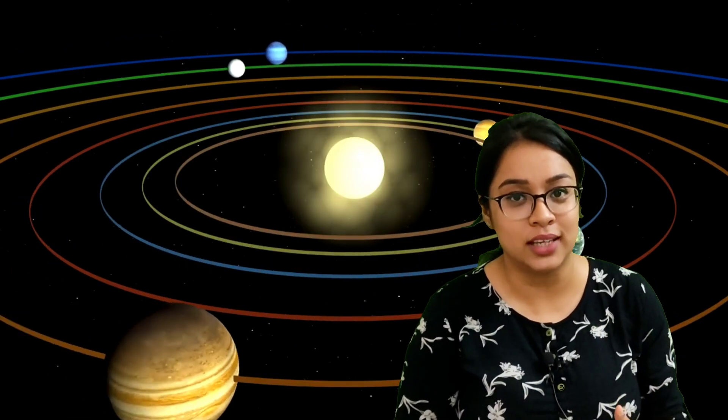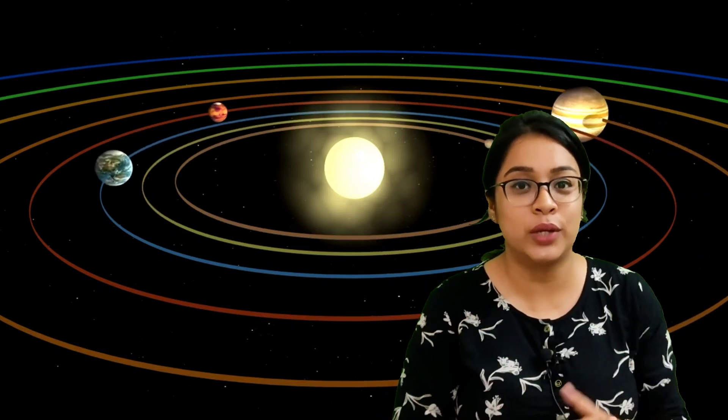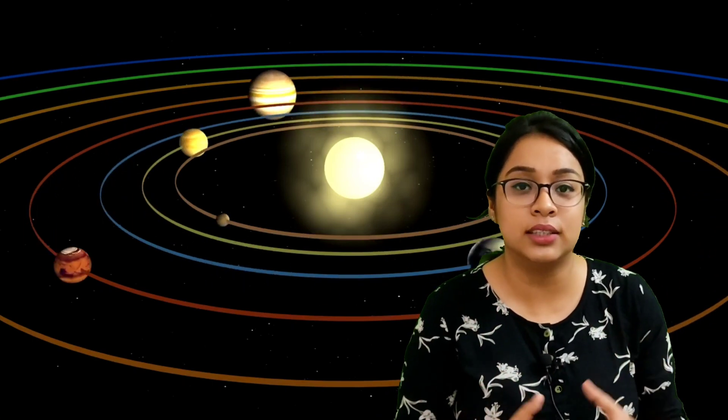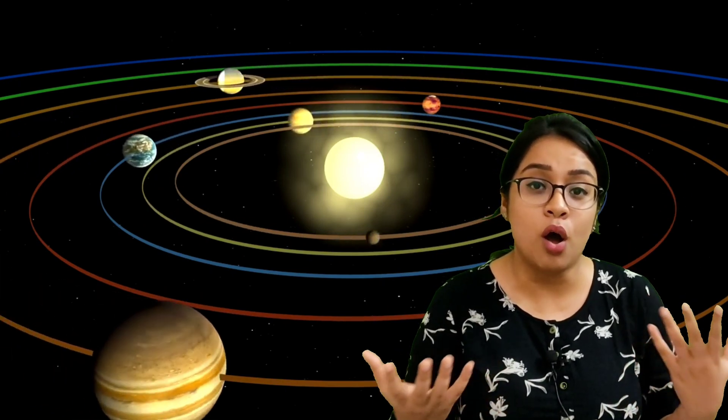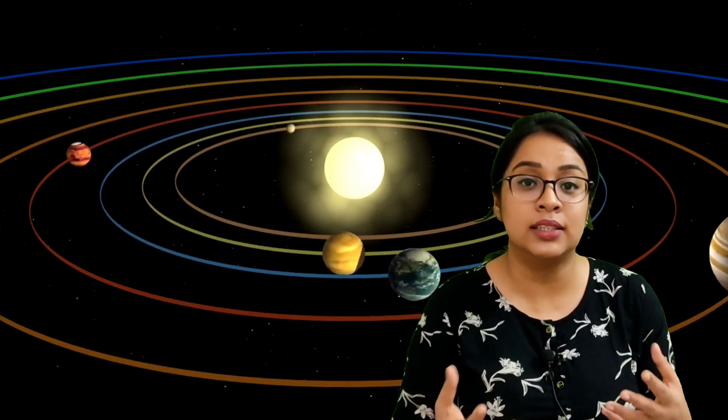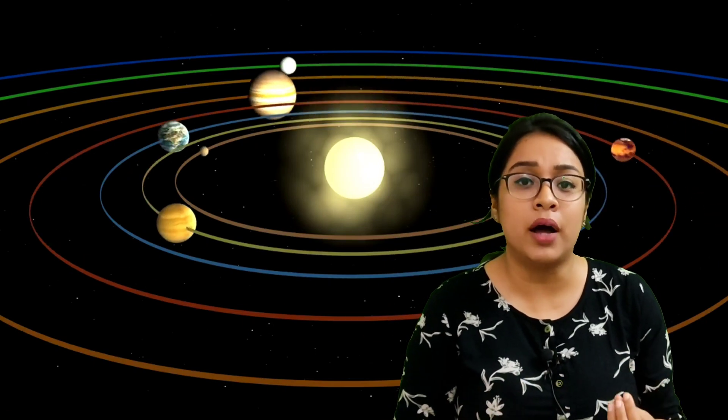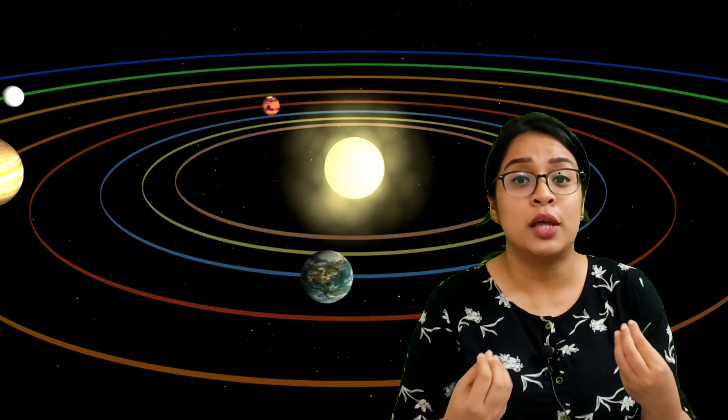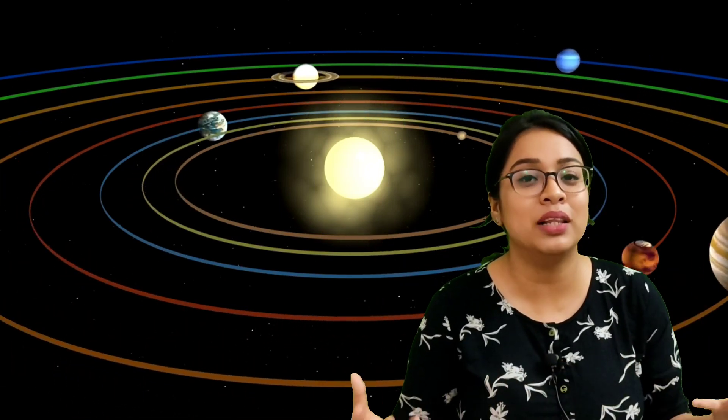These are the eight planets which revolve around the sun in elliptical orbit. In the picture, you can see how the solar system looks. It looks like a disk where all the planets are revolving around the sun and we are part of the huge Milky Way. What is Milky Way? Milky Way is the family of stars.